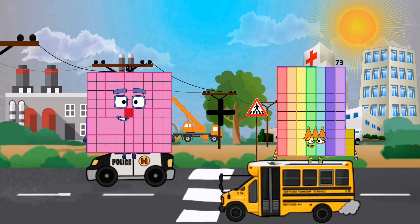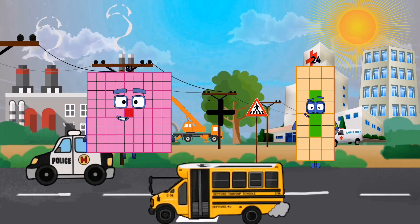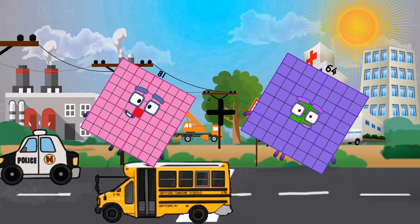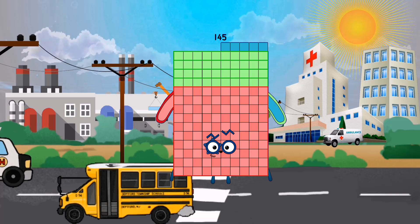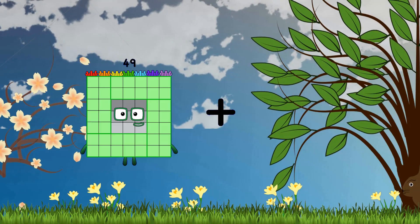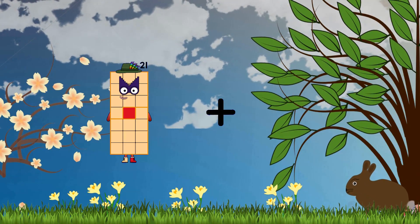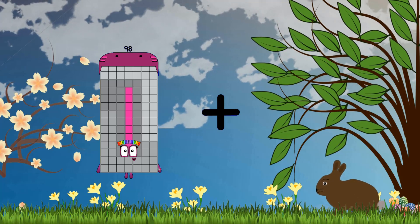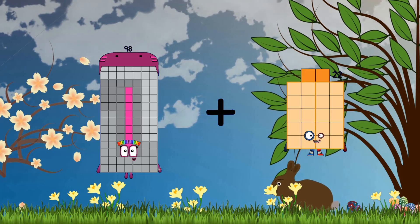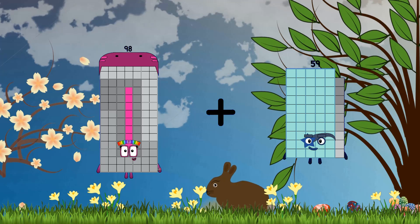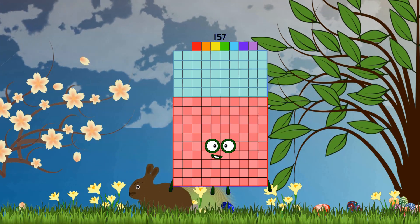Eighty-one plus sixty-four equals one hundred forty-five. Ninety-eight plus fifty-nine equals one hundred fifty-seven.